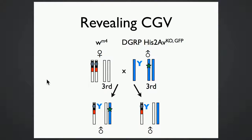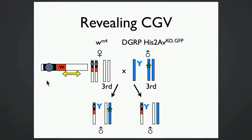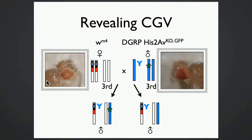Now that we created a GFP-tagged His2AV knockout in the DGRP lines, we need a way to reveal the cryptic genetic variation in the system. We cross these mutant DGRP males to a white mottled 4 tester strain. This white mottled 4 line is special because an inversion on the X chromosome places the white gene near pericentric heterochromatin, making chromatin state critical for whether the white gene is expressed and red pigment is made in eye cells.